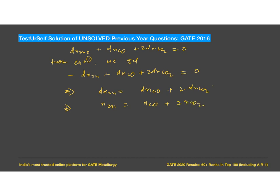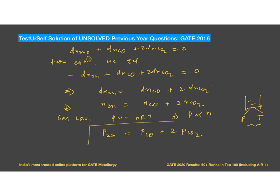Applying the ideal gas law, PV = nRT, since pressure and temperature are both constant, pressure is proportional to n. Replacing n with partial pressure, we get: P_Zn = P_CO + 2·P_CO₂. This is the final answer.